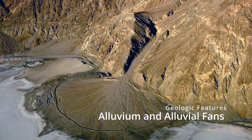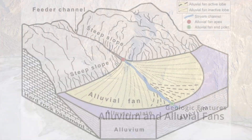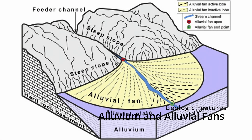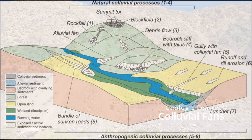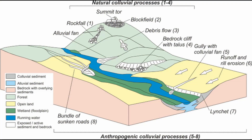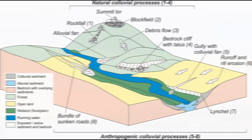Alluvium and alluvial fans are soil deposits transported to the bottom of a steep slope by the erosion of a river flowing down that steep slope. Colluvial fans are deposits that form by gravity at the bottom of steep slopes when the slope fails.